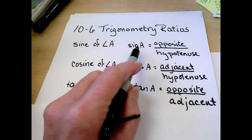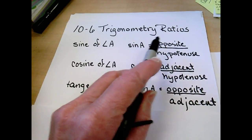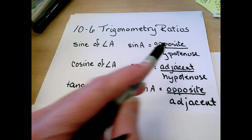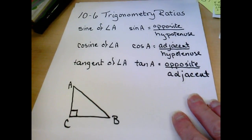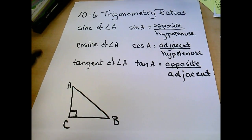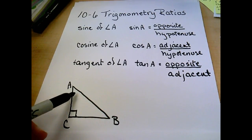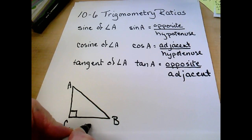Sine, we abbreviate SIN. The angle A is equal to the opposite over the hypotenuse. We are talking about right triangles here that look like this. If we have our sine of A, the opposite side of A is this side, CB.